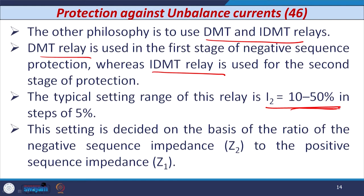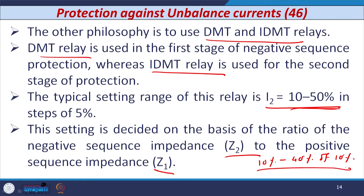Usually it is the CT secondary current. For the negative phase sequence relay (46), its setting is decided based on the ratio of negative sequence impedance Z2 to positive sequence impedance Z1. You take the ratio Z2/Z1 and decide the setting according to the setting range given. In this case, the setting range is 10% to 40% in steps of 10% — this is for the 46 relay, whereas the range of 10% to 50% in steps of 5% is for the DMT or IDMT relay.